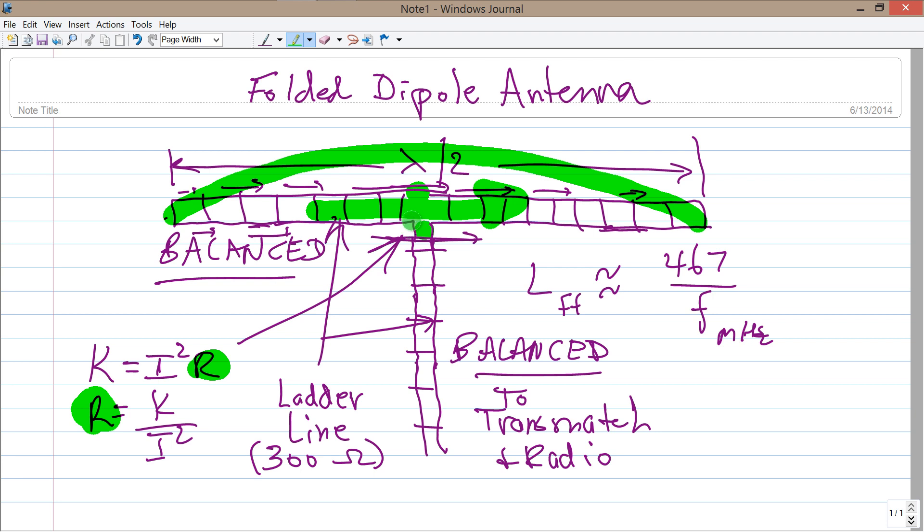Actually more like 290 if you want to get really theoretical about it, 292 perhaps exactly. But it's going to be very, very close to the characteristic impedance of this 300 ohm line, meaning that you're going to have this low loss ladder line here with a 1 to 1 standing wave ratio on it. So you'll be able to run a very long length of this ladder line to the transmatch and your radio.